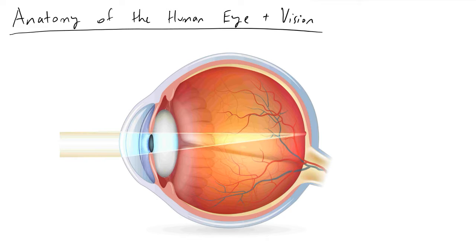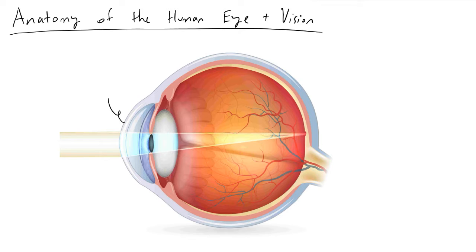It's one of the coolest parts of anatomy in my opinion. To begin with, the very first thing that a photon will come across as you see it is called the conjunctiva. The conjunctiva is the outermost layer of your eye and its job is to protect the cornea.